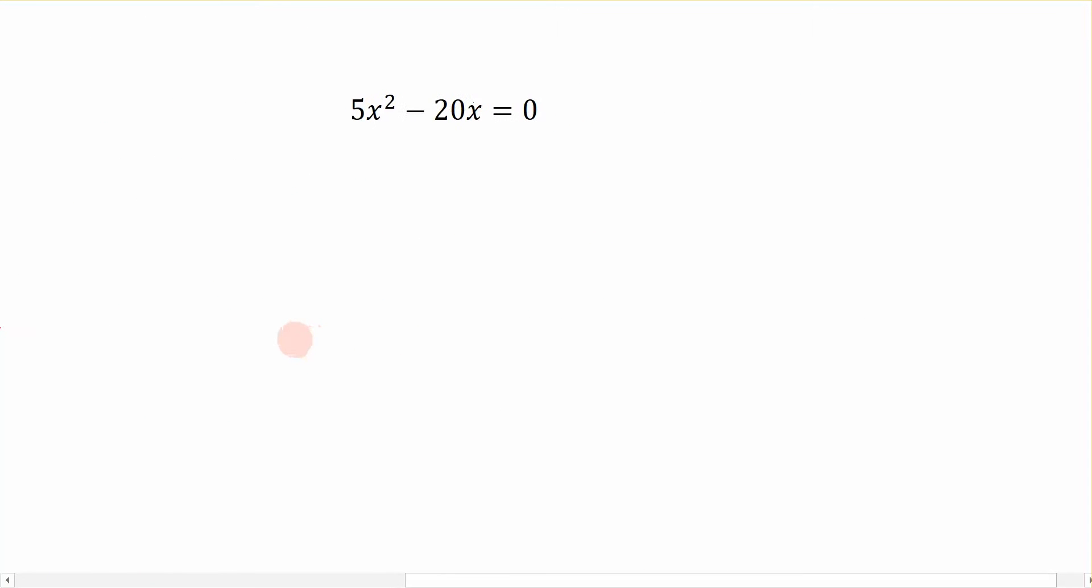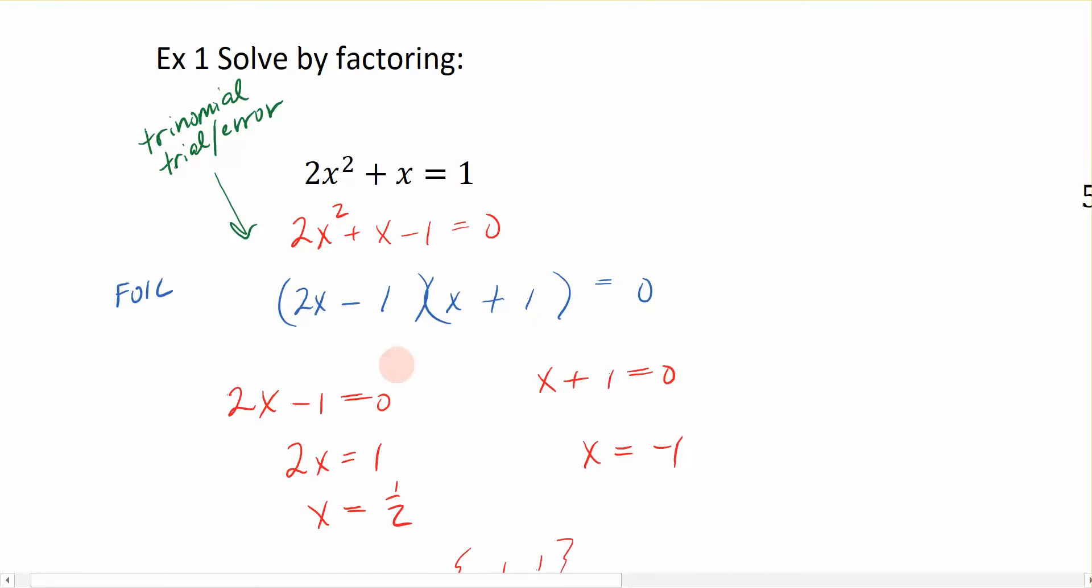Now let's look at this example over here. This is 5x squared minus 20x equals zero. And we already know that we are going to solve this by factoring. But notice that in this particular setup, I do have all of my terms on one side set equal to zero. So that is a positive. But I only have two terms here. That is an indication that I cannot do trial and error factoring like what we tried to do over here.